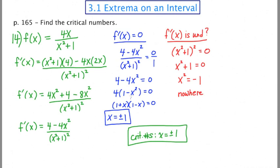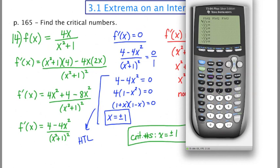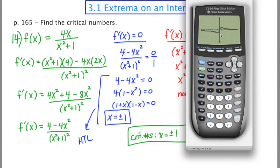Once again, the answers from the first question tell us where there are going to be horizontal tangent lines. I want to confirm this by looking at the graph. I'll enter 4x divided by (x² + 1) and use a standard viewing window. Looking at the graph, there appear to be two places with a horizontal tangent line — one at about -1 and another at +1. This procedure allows us to find those critical numbers.